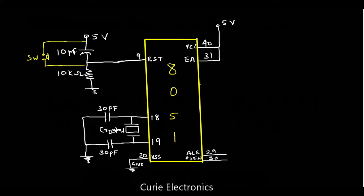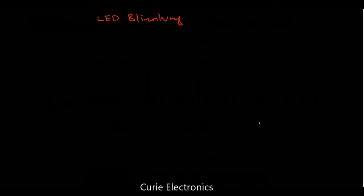Today we are going to make a LED blink circuit. The first program is a LED blink. First we will write a code for LED blinking, then we will put it using a programmer, upload it to the microcontroller, make the hardware, and see how it is working.